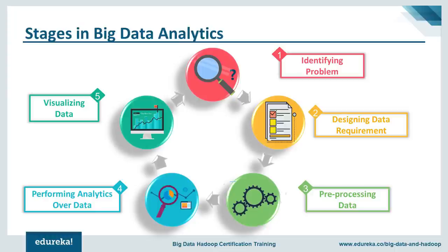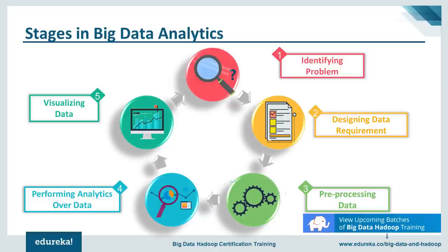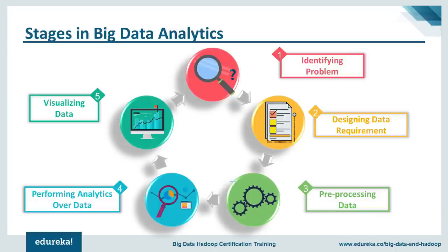The big data analytics process involves five stages. First, identifying the problem — the most important step. Second, designing data requirements — deciding what kind of data is needed to analyze the problem. Third, pre-processing — cleaning and processing the data. Fourth, the analytics stage — analyzing the processed data using various methods. Fifth, data visualization — visualizing data using tools like Tableau and AngularJS, which takes place at the end of the process.